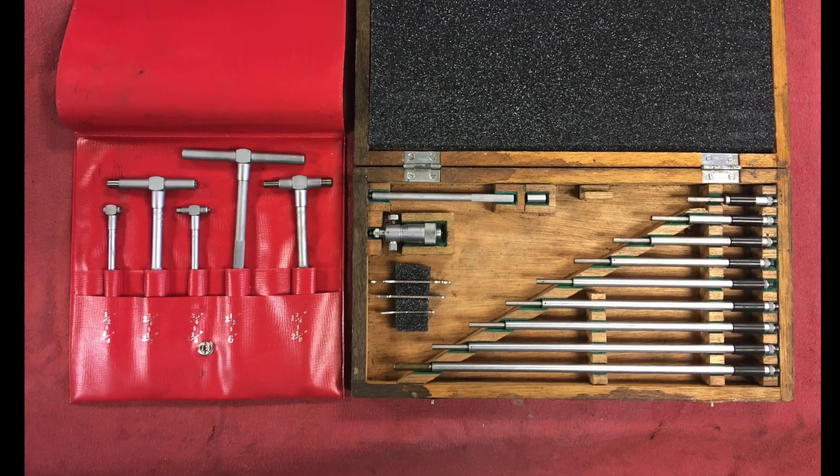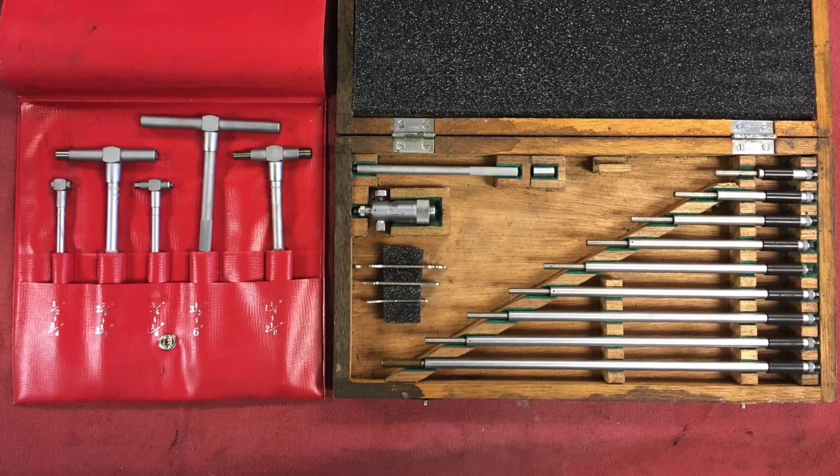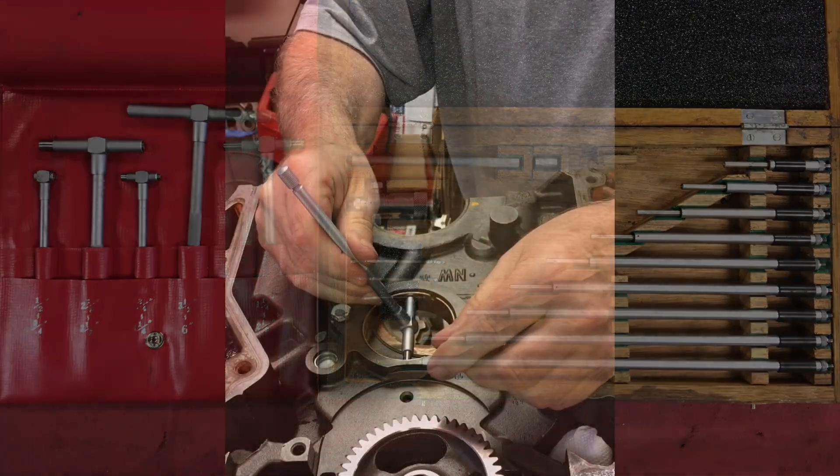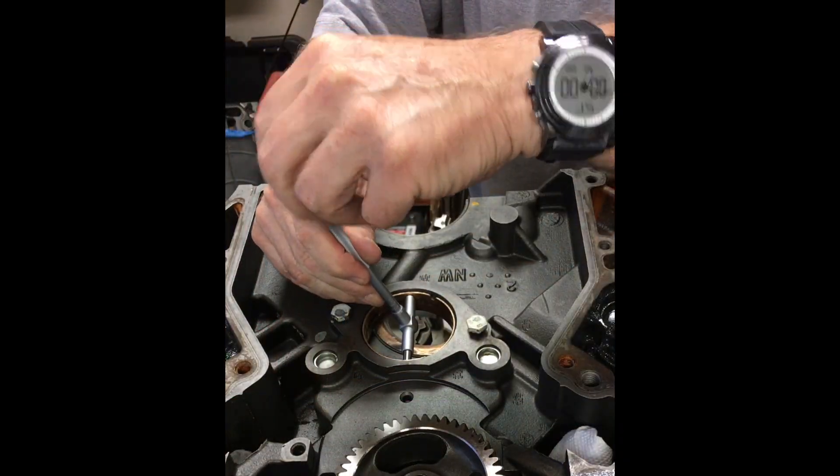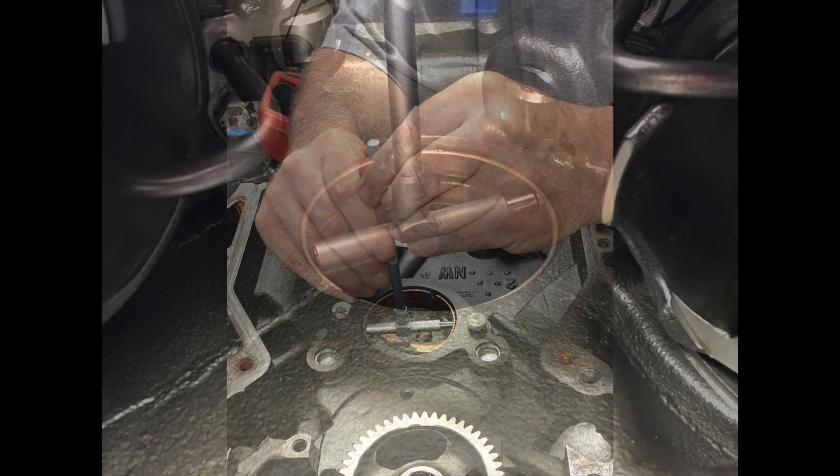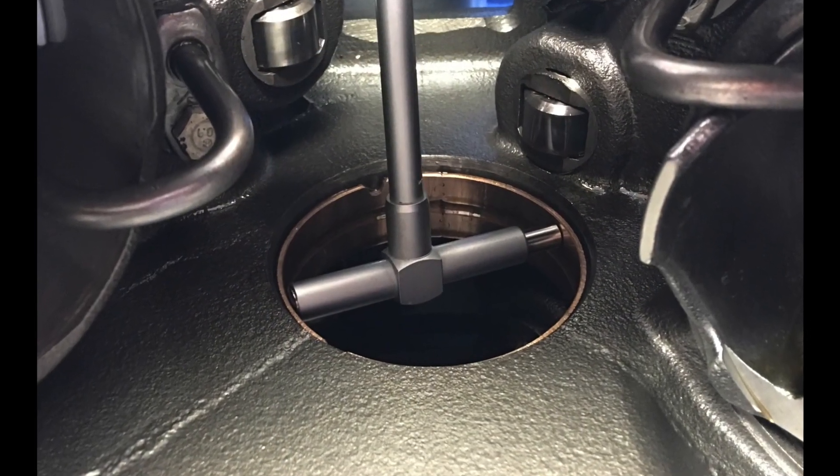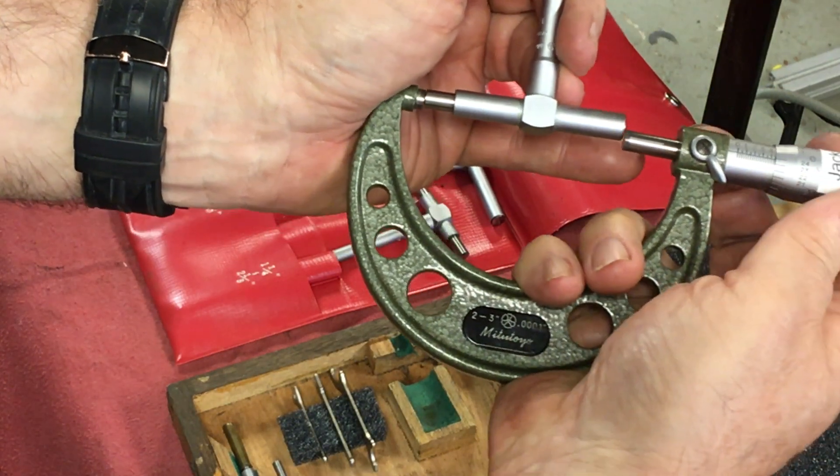I can use either telescoping gauges or an inside micrometer. Both use the same technique, a learned skill, sort of wobbling the tool around. However, inside the motor, it's easiest to use the telescoping gauges, and then measure the width with a standard micrometer.